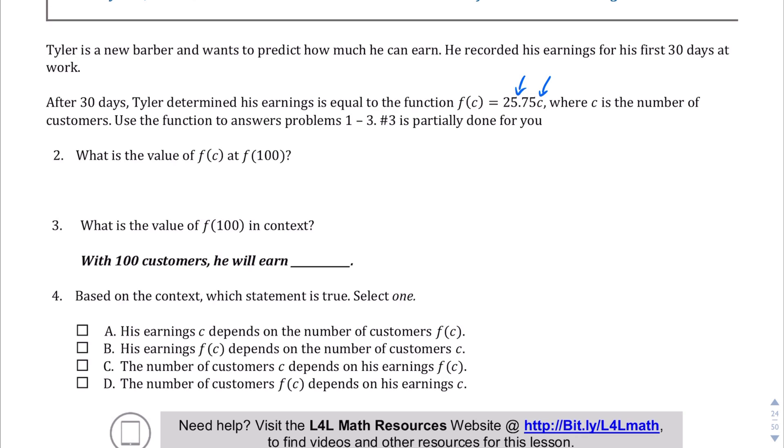So depending on the number of customers, you multiply that by 25.75. This way, as long as Tyler thinks about how many customers he's bringing in per month, per week, or per year, whatever, he can actually project how much money he's going to end up making based on the last 30 days of this experiment that he's been running.